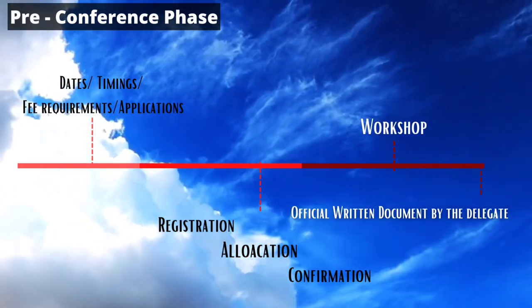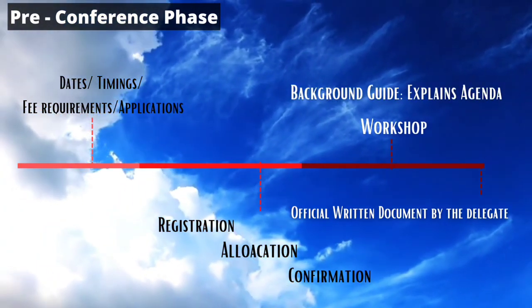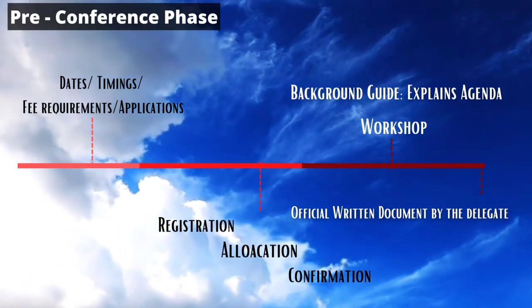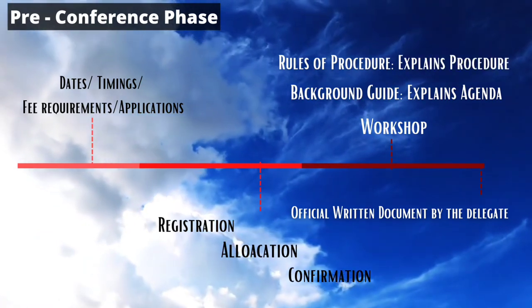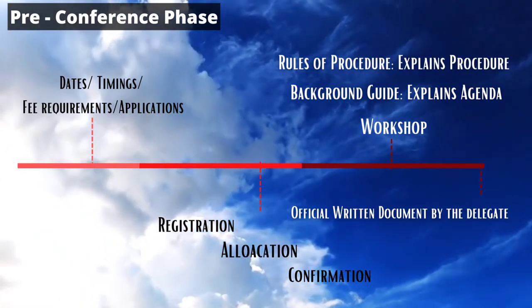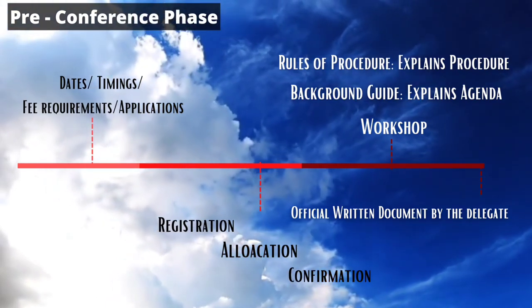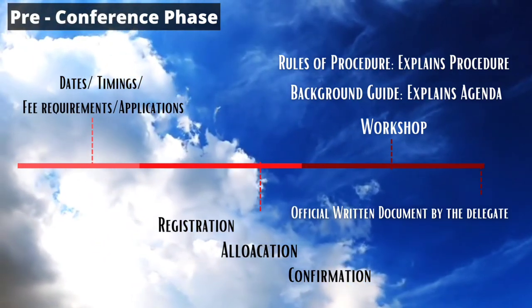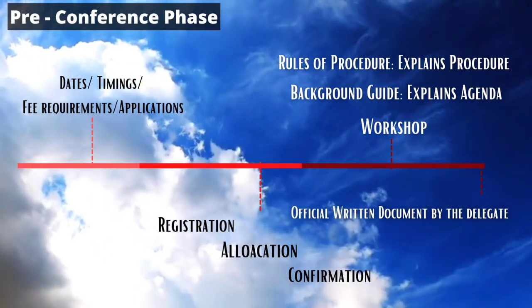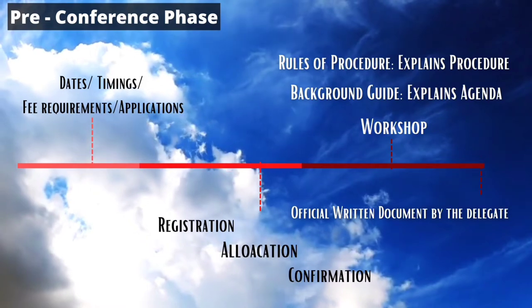Most conferences provide delegates with two brief documents for guidance. One, called the background guide, focuses on explaining the agendas of the delegates' respective committees and mentions various areas of potential discussion and research. The second is called the rules of procedures document, which thoroughly explains the conference's chosen rules of procedures. A few conferences also conduct training workshops for all delegates to help them understand the rules of procedures, ensuring delegates are clear about their committee agenda and the rules of procedures before the conference begins.